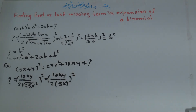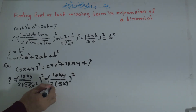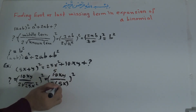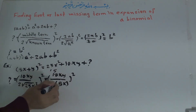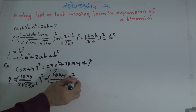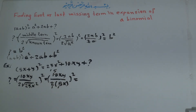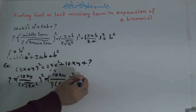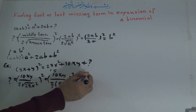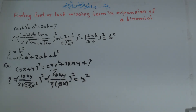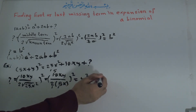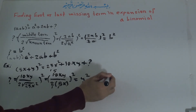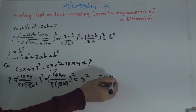Now we cancel: 2 with 2, and 5 with 5, and x cancels with x. The only remaining letter is y — y to the power of 2. It means that the question mark is equal to y to the power of 2.